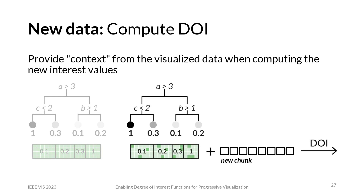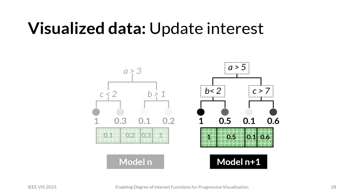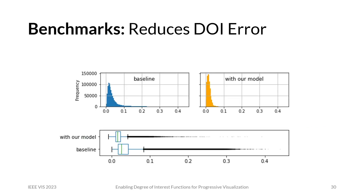Now, what about previous data already in the visualization? We need to ensure that the old interest values are compatible with the new data — the inverse of the previous step. We compare the old and new interest models by drawing a balanced sample over the leaf nodes of a regression tree and comparing the predicted interest. If they differ significantly, we update the interest for all items in that leaf node. Our benchmarks measured the DOI error — the difference between DOI values shown in the visualization and those computed monolithically over all data — and showed that our approach noticeably reduces this error compared to the baseline.